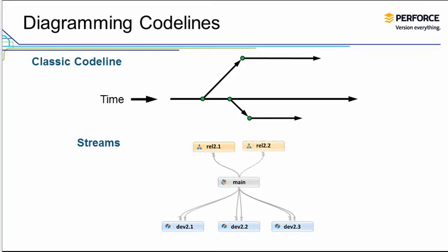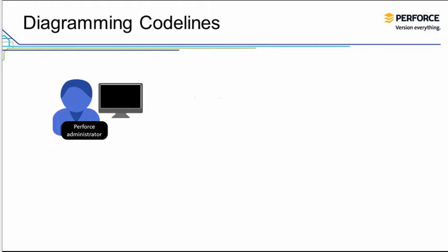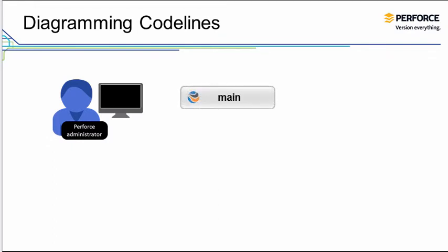Branching is the process of creating a new branch from an existing branch. In the streams world, you branch by defining a new stream. A stream is a child of the stream from which it was branched. Conversely, the source for a stream is the parent of the stream. A stream that has no parent is called the mainline.